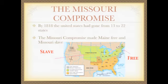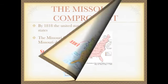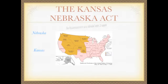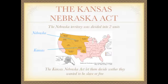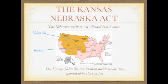By 1818, the United States had gone from 13 to 22 states. The Missouri Compromise made Maine free and Missouri slave. The new Nebraska Territory was divided into two units, Nebraska and Kansas. The Kansas-Nebraska Act let them decide whether they wanted to be slave or free.